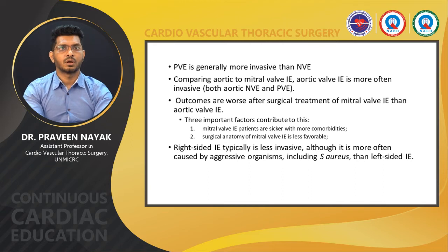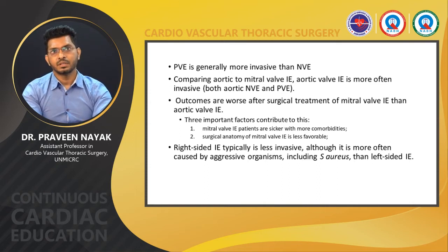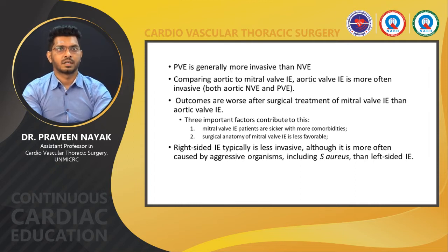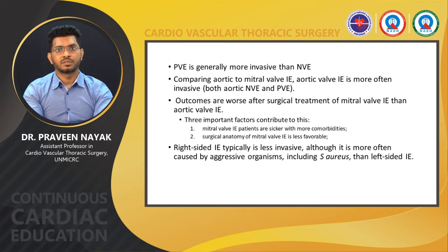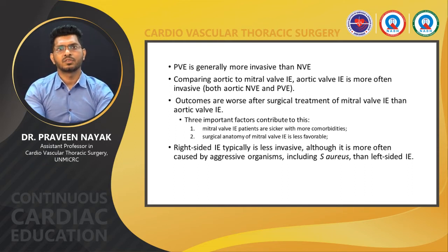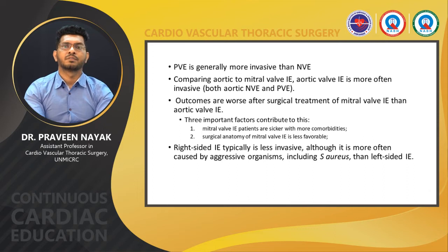Comparing native aortic to mitral valve infective endocarditis, aortic valve infective endocarditis is more often invasive. Despite this, outcomes are worse after surgical treatment for mitral valve infective endocarditis compared to aortic valve. Three important factors contribute to this: patients with mitral valve infective endocarditis are already sicker with more comorbidities, the surgical anatomy of the mitral valve is less favorable for invasive disease, and there is a non-availability of allograft alternatives for invasive mitral valve disease.